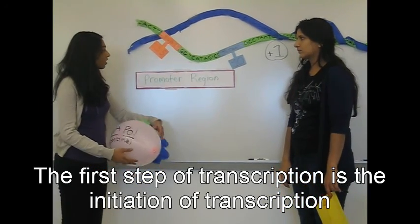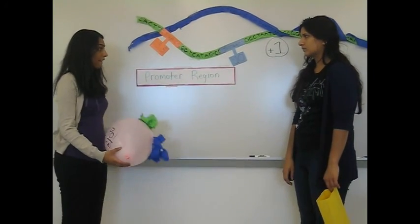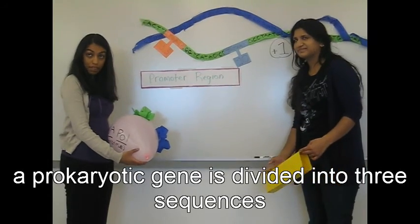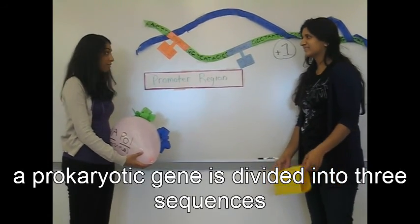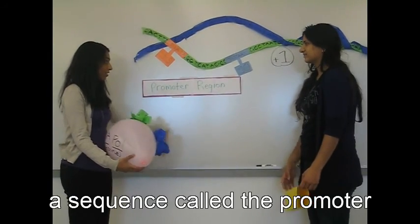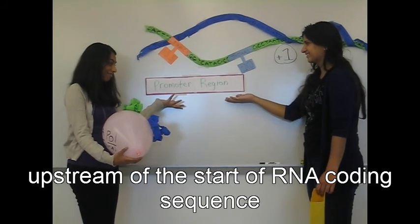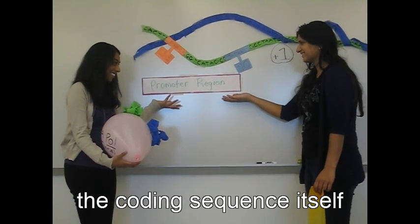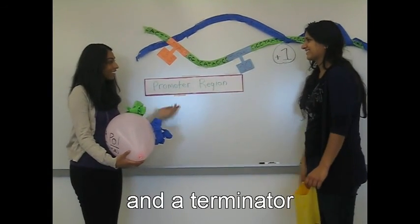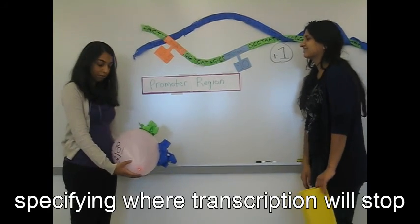The first step of transcription is the initiation of transcription. A prokaryotic gene is divided into three sequences: a sequence called the promoter, upstream of the start of the RNA coding sequence; the coding sequence itself; and a terminator specifying where transcription will stop.